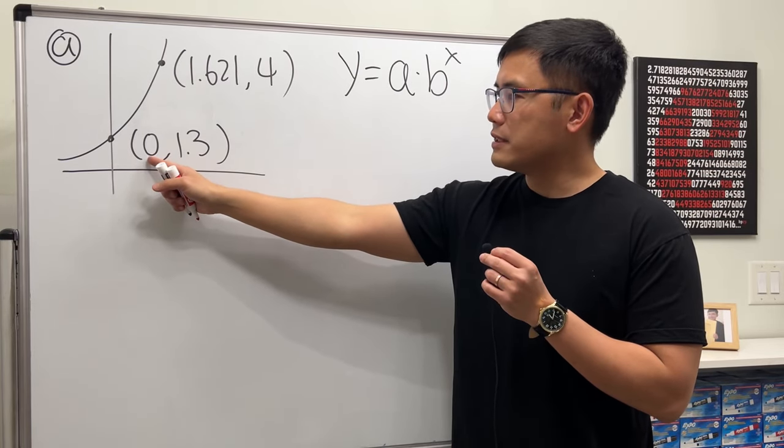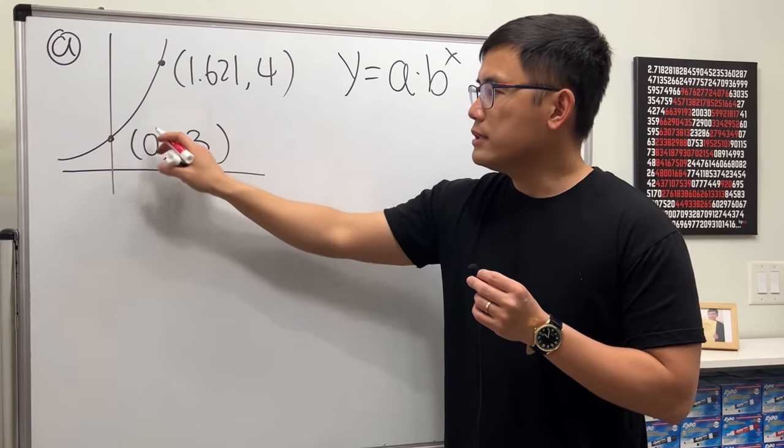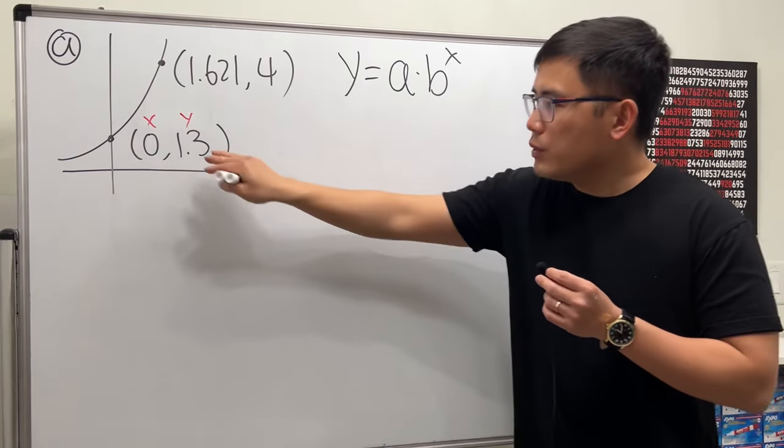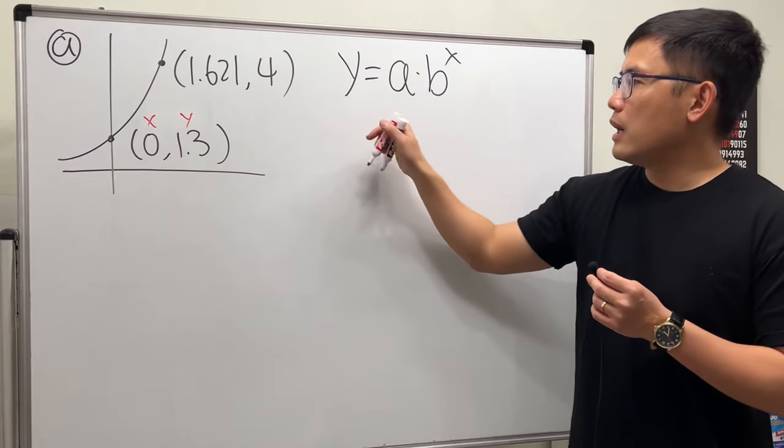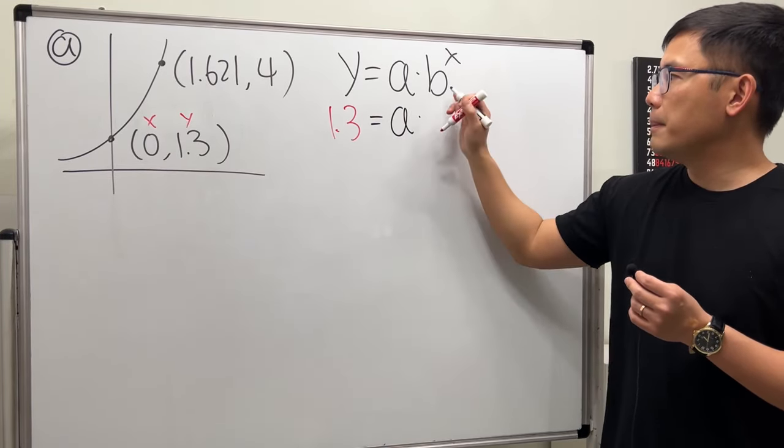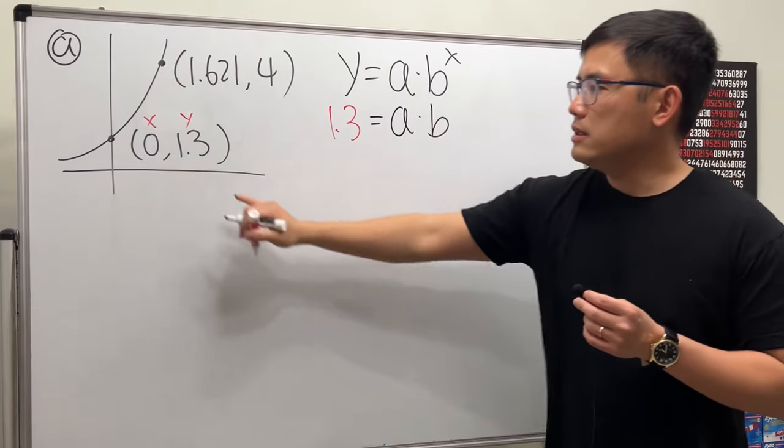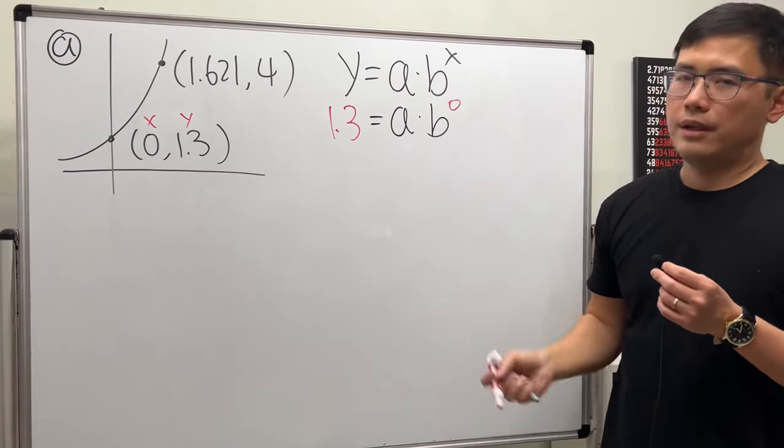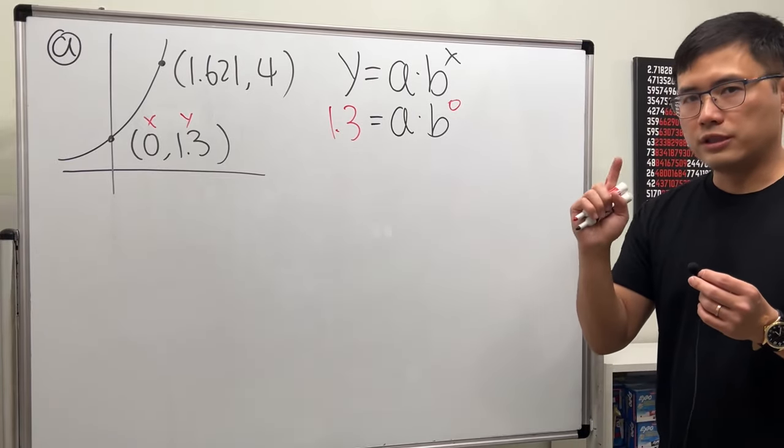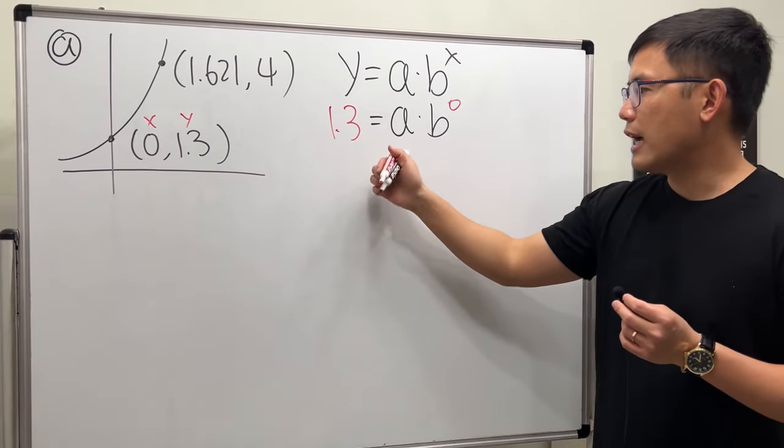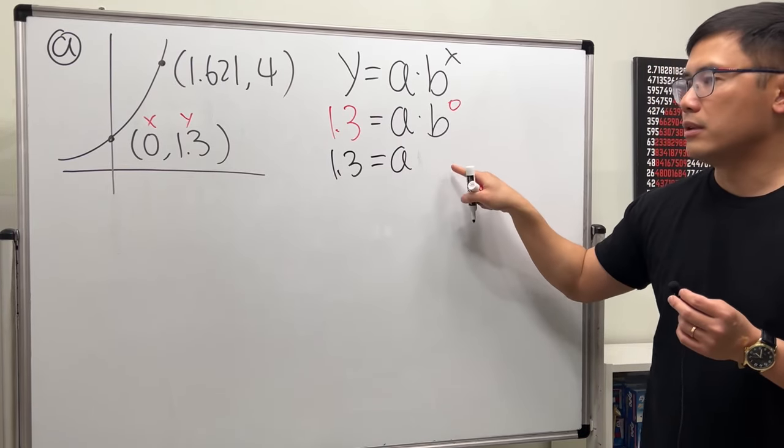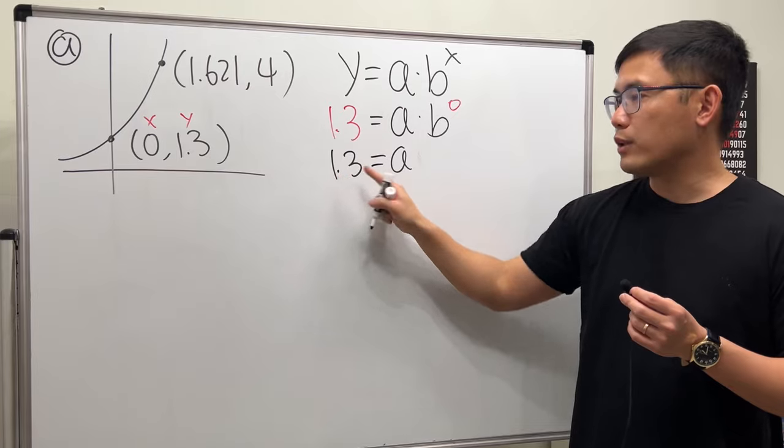For the first point, we have (0, 1.3) that tells us x is 0, y is 1.3. So we can just plug in this value. Let's put down 1.3 here, and that's equal to a times b to the 0 power. b to the 0's power is just equal to 1, so we have 1.3 equals a times 1. So we know a is equal to 1.3 right away.